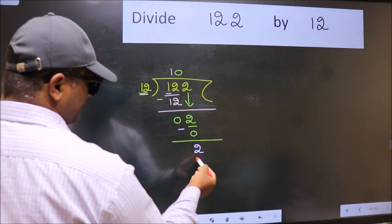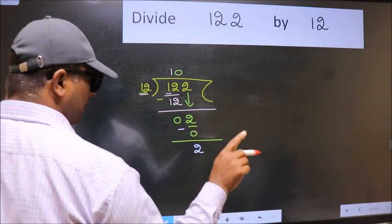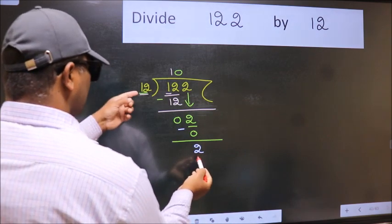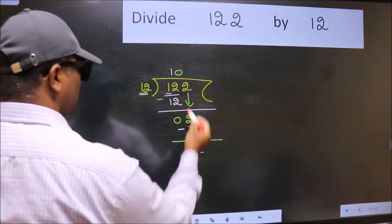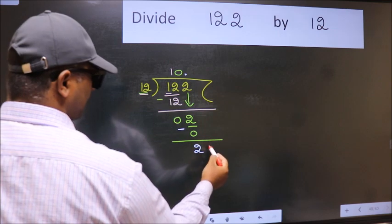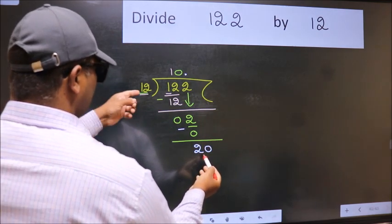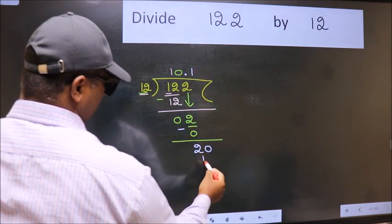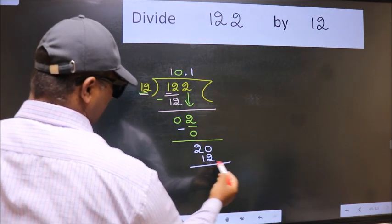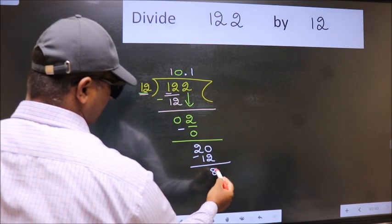Over here we did not bring any number down and 2 is smaller than 12. So, now we can put dot and take 0. So, 20. A number close to 20 in the 12 table is 12 once, 12. Now, we subtract, we get 8.